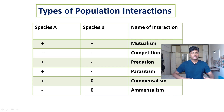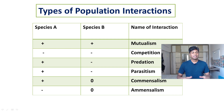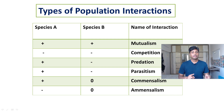It can be a population of lions, tigers, humans, or even plants. We all know that on this planet there is an interaction between different types of species. The interactions can be mutualism, competition, predation, parasitism, commensalism, and amensalism.